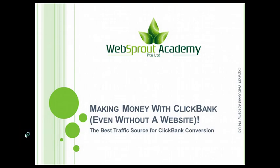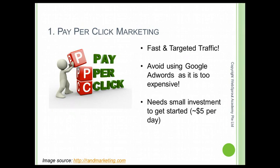Let me share with you some of the traffic sources for you to consider. The first type is pay-per-click marketing, also called search engine marketing. This means you are putting advertisements on search engines at the top and right side, so when people search for a problem or solution they are looking for, they can click on your advertisement and go straight to the ClickBank product. The advantage is that it is fast and targeted.